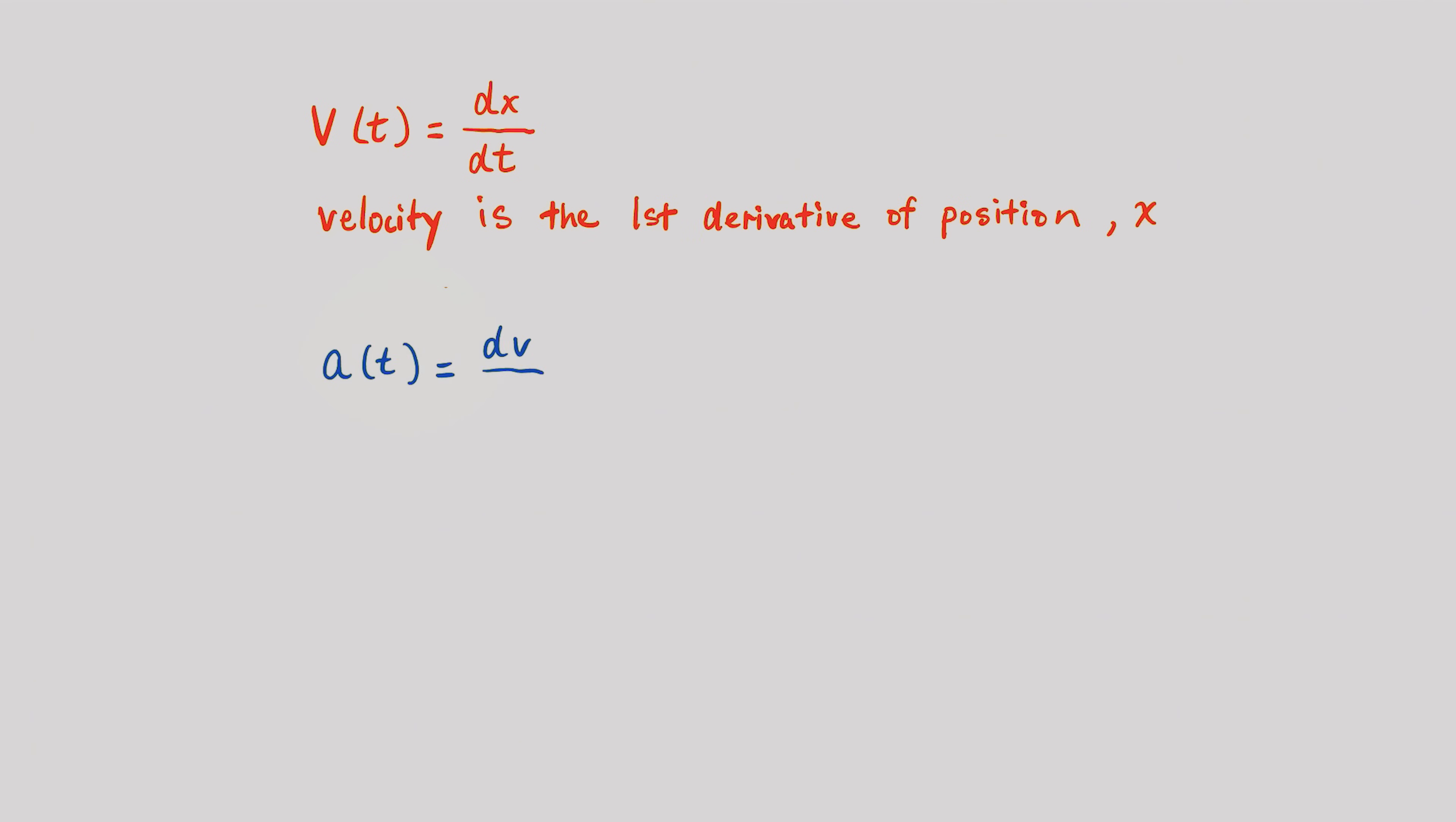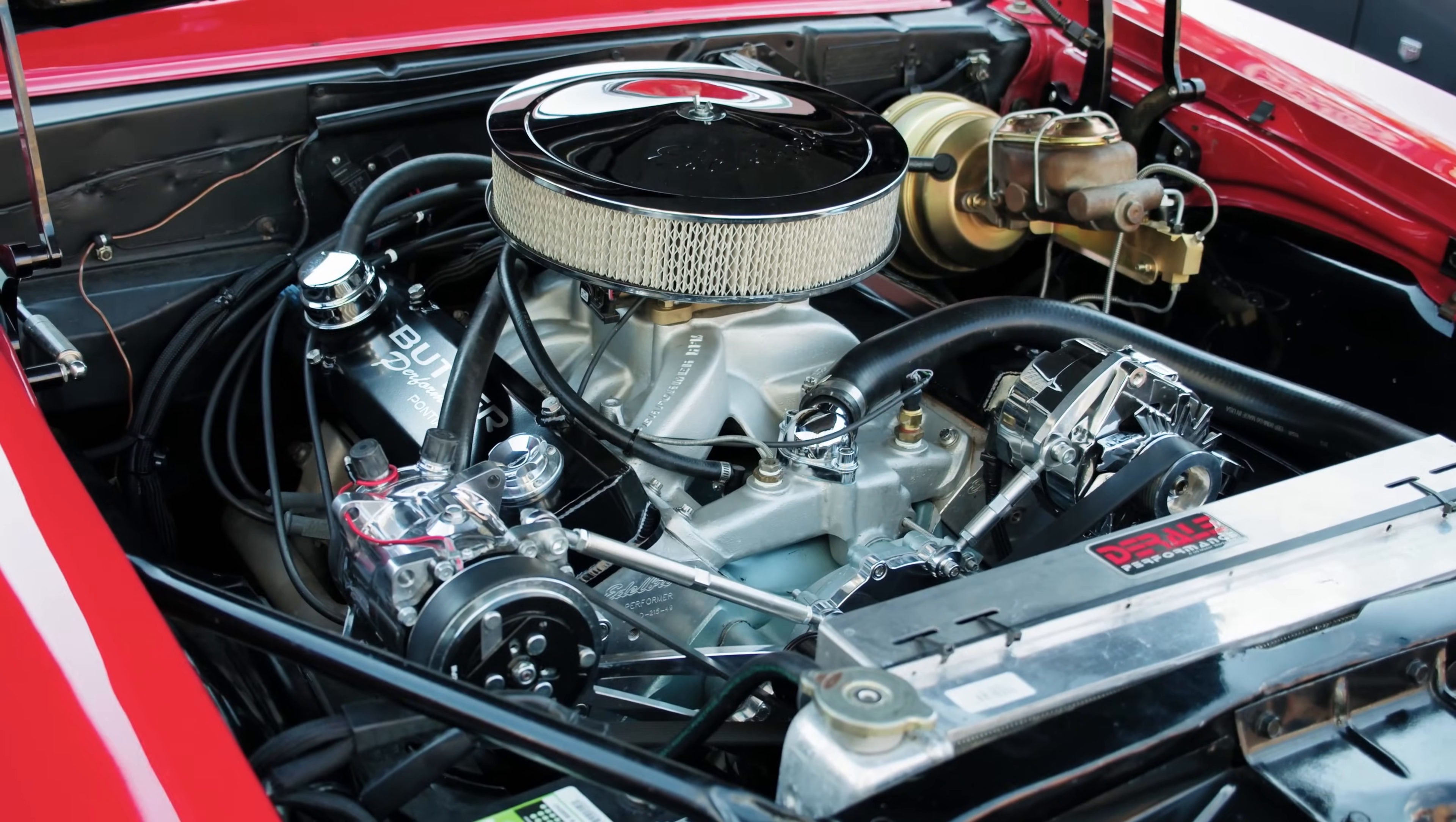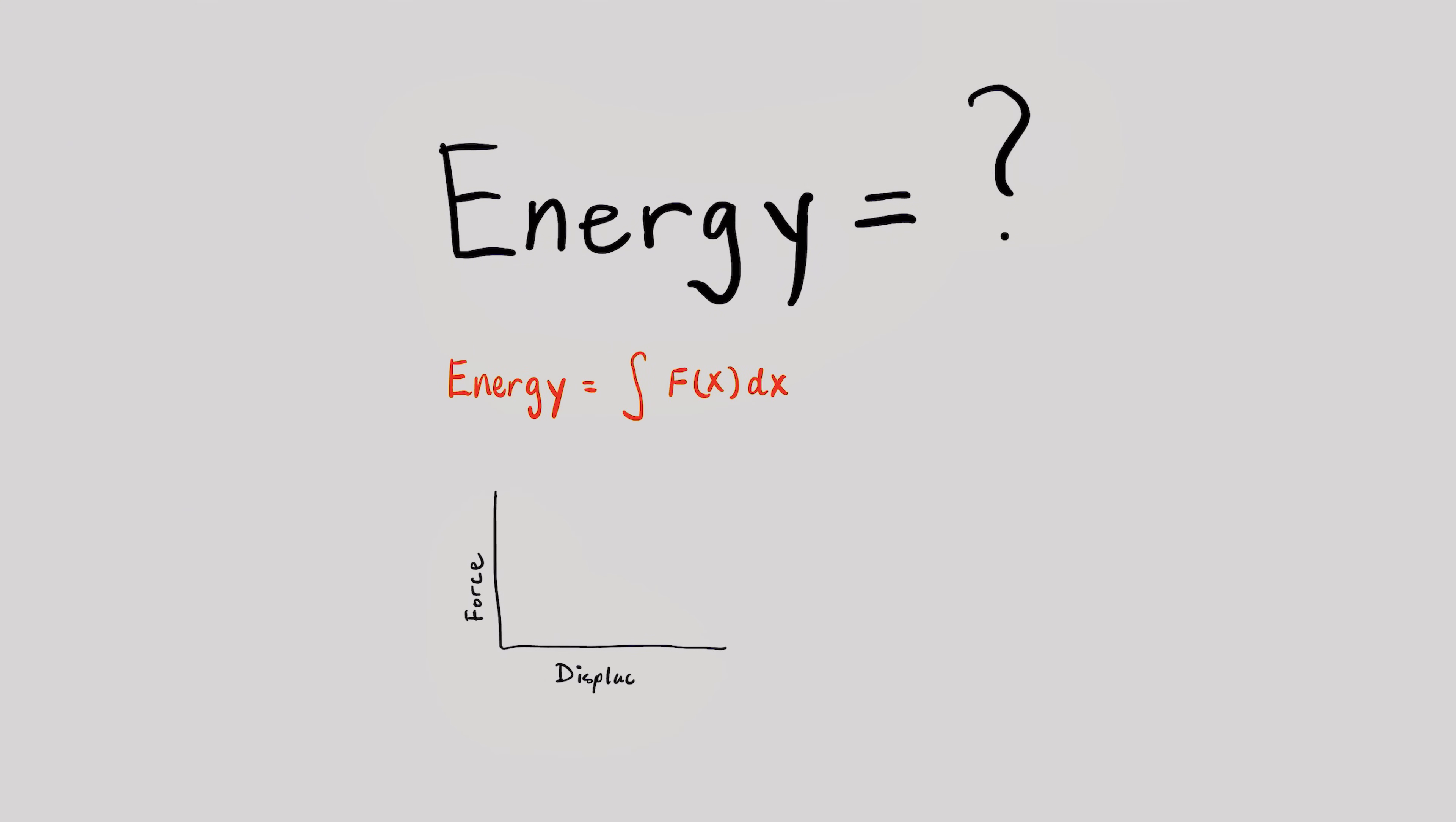It's also referred to as the first derivative of position. Acceleration is the derivative of velocity with respect to time and tells us how fast speed changes. It's also called the second derivative of position. For example, when analyzing the motion of a piston inside an engine, you need derivatives to describe its changing velocity and acceleration. Analyzing piston motion ensures that parts last, improves fuel efficiency, and ensures your car doesn't sound like it's about to explode. Or if you're calculating how much energy a shock absorber absorbs during impact, you would need to use an integral to calculate the area under a force versus displacement curve.